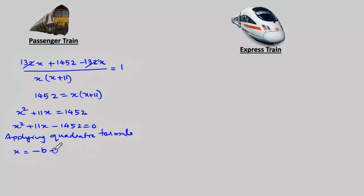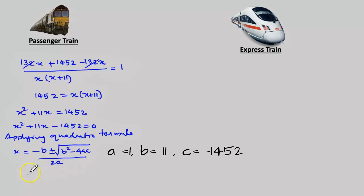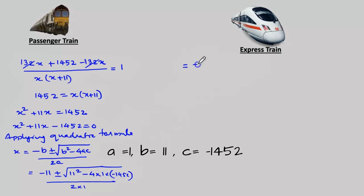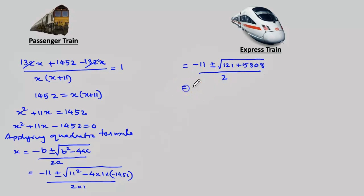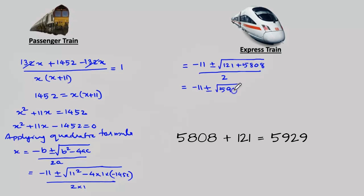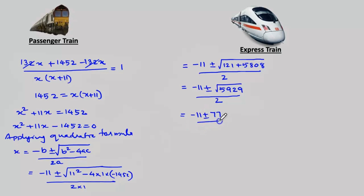Applying the quadratic formula: x equals minus b plus or minus root of b squared minus 4ac, divided by 2a. Substituting: minus 11 plus or minus root of 11 squared minus 4 into 1 into minus 1452, divided by 2 into 1. This gives minus 11 plus or minus root of 121 plus 5808, divided by 2, which is minus 11 plus or minus root of 5929, divided by 2.